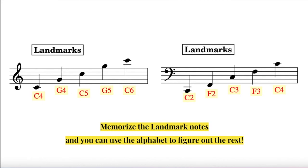Memorize the landmark notes, and you can use the alphabet to figure out the rest. Note that the C on the ledger line below the treble clef is the exact same pitch or frequency as the C on the ledger line above the bass clef. They are both C4.